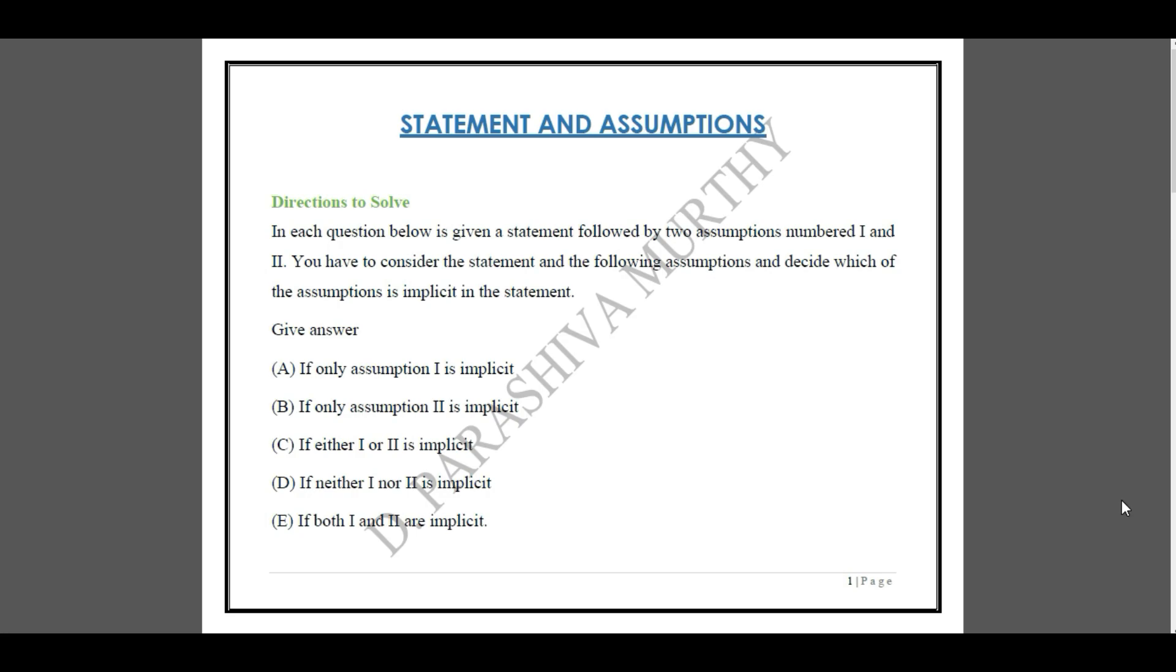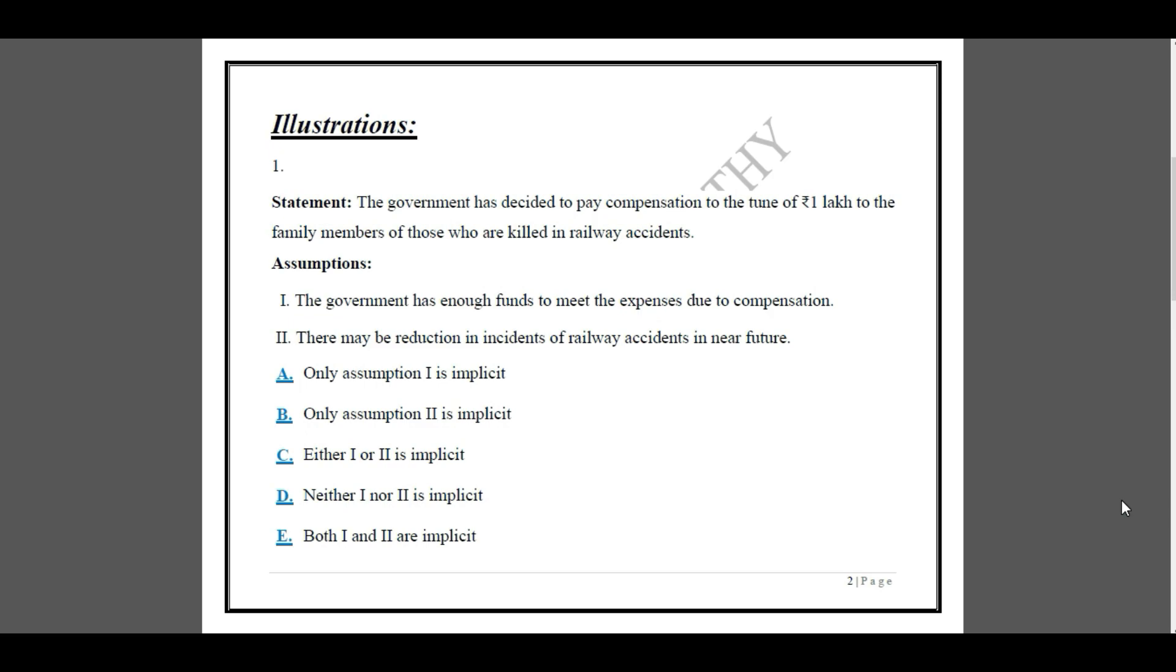The first example for you. Statement: The government has decided to pay the compensation to the tune of one lakh to the family members of those who are killed in the railway accidents. So what does this statement mean? Very simple. If a person is killed in a railway accident, the government has decided to pay the compensation to the tune of one lakh.